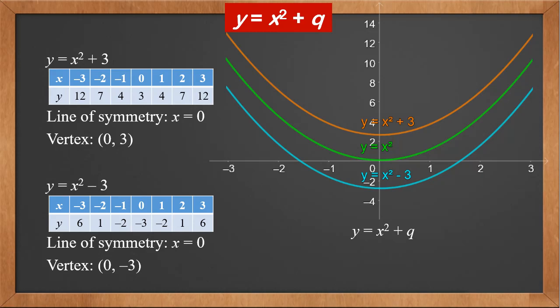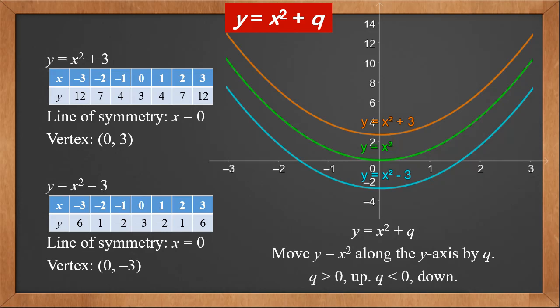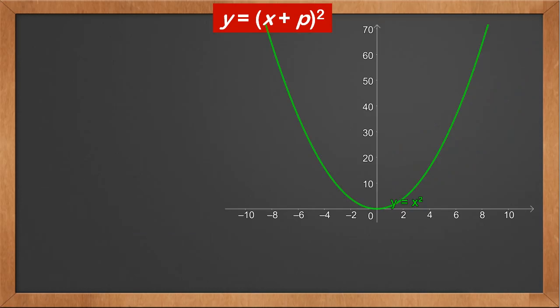Therefore, for y equals x squared plus q, it's the graph of y equals x squared moved along the y axis by q units. If q is positive, the graph moves up. If q is negative, the graph moves down.